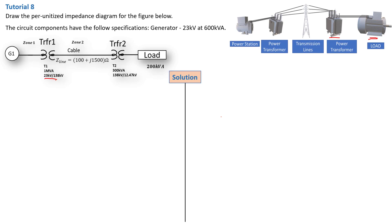If you don't step it up, at 23 kilovolt and 600 kilovolt ampere, you're going to have a lot of current flowing from the generator, and you won't be able to transfer all that current through a transmission line — there will be a lot of losses through the resistance of the conductors. So you have to step up your voltage, and therefore the current will be decreased. That is transformer properties.